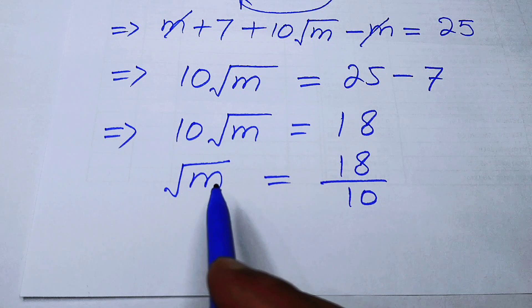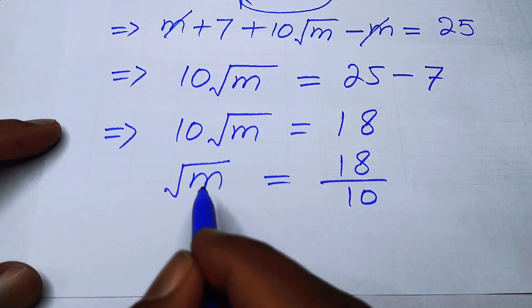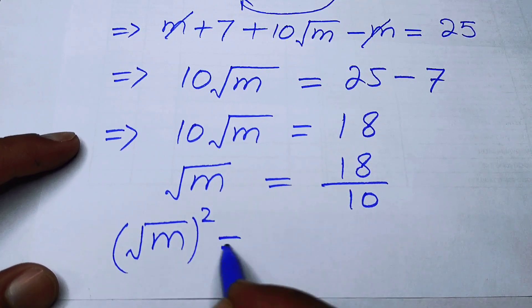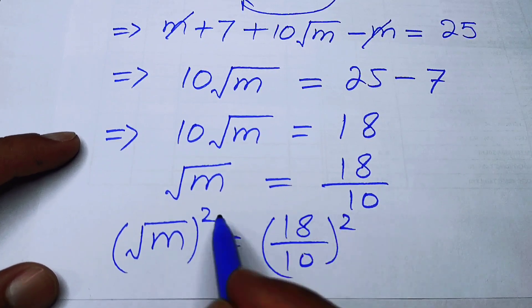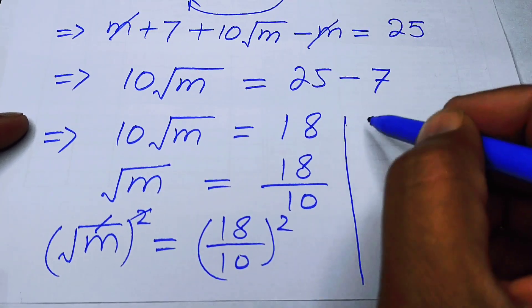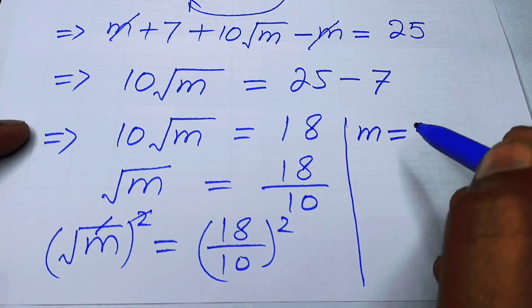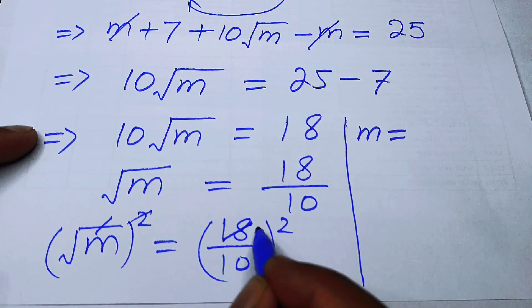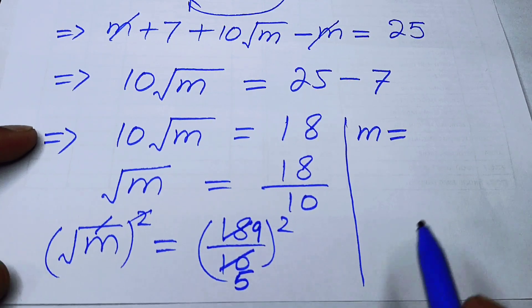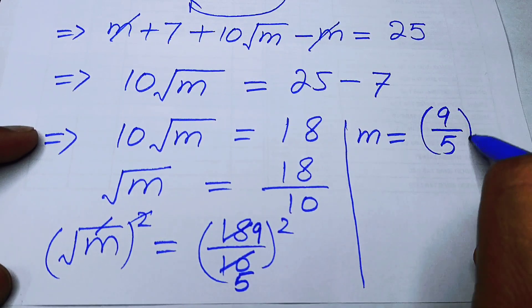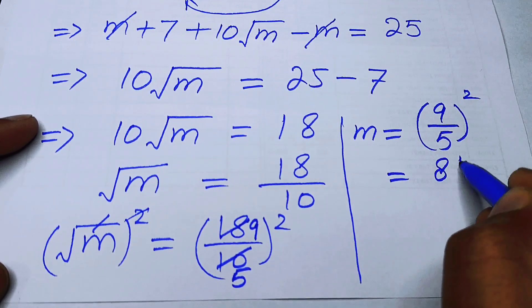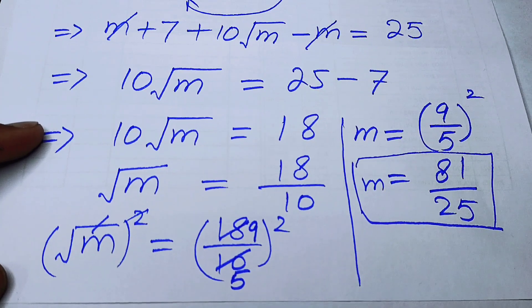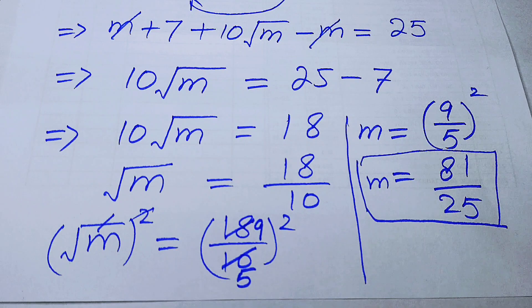Now we remove the square root to find m. We square both sides: (√m)² = (18/10)², and the square and square root undo each other on the left, giving m. On the right, we simplify 18/10 by cancelling: 18/10 = 9/5, so m = (9/5)² = 81/25. This is our final answer. Thank you for watching — please subscribe for more exciting videos!